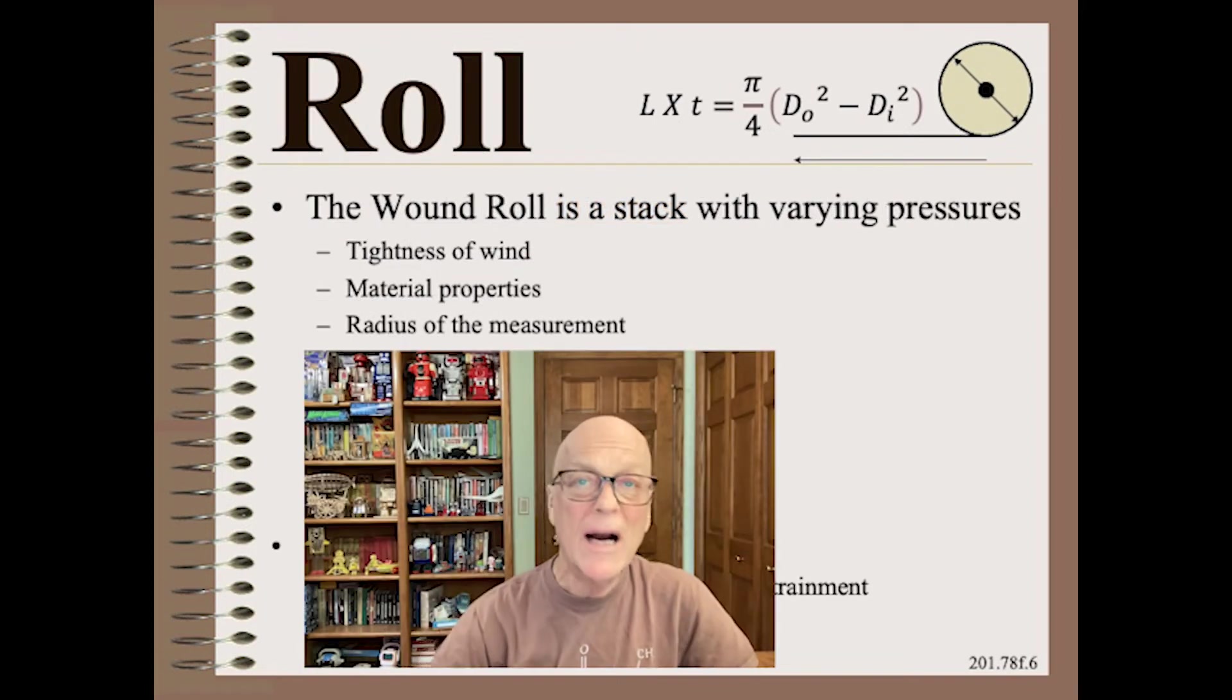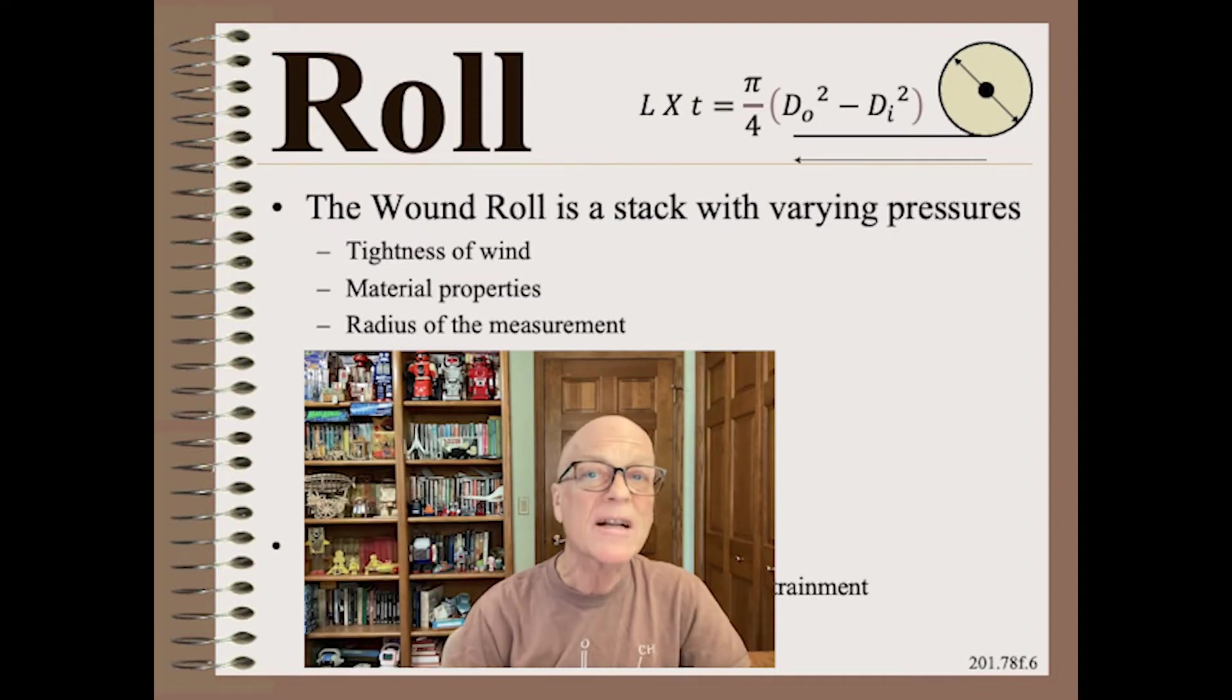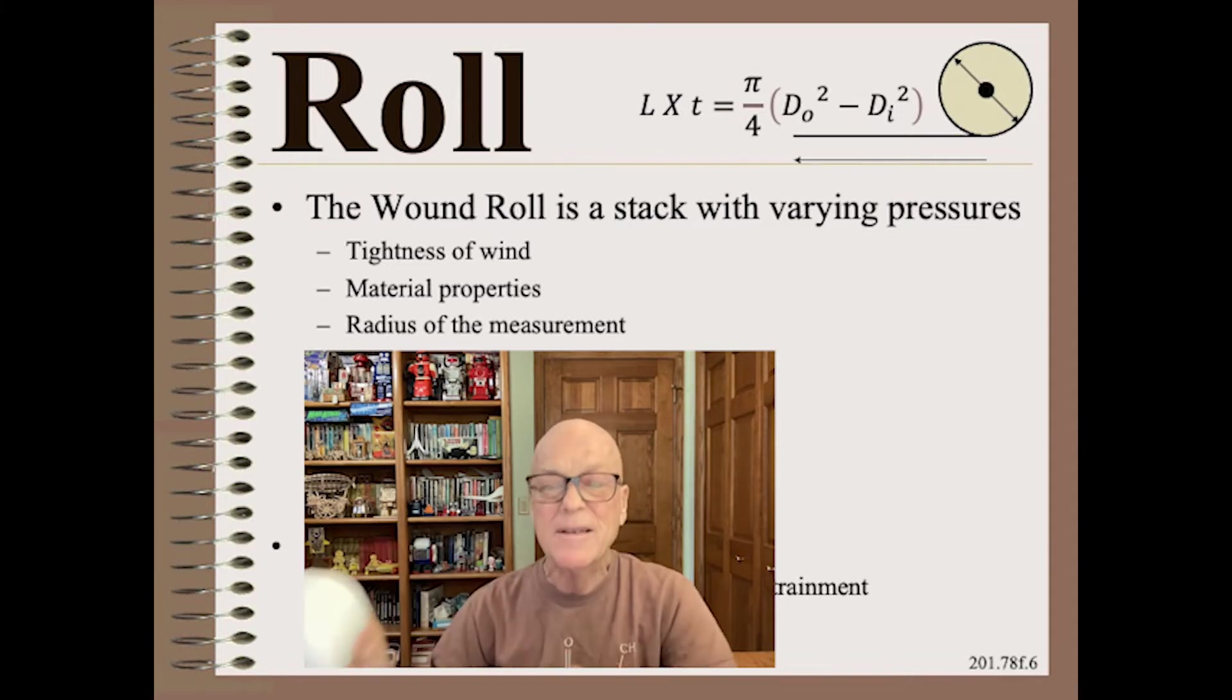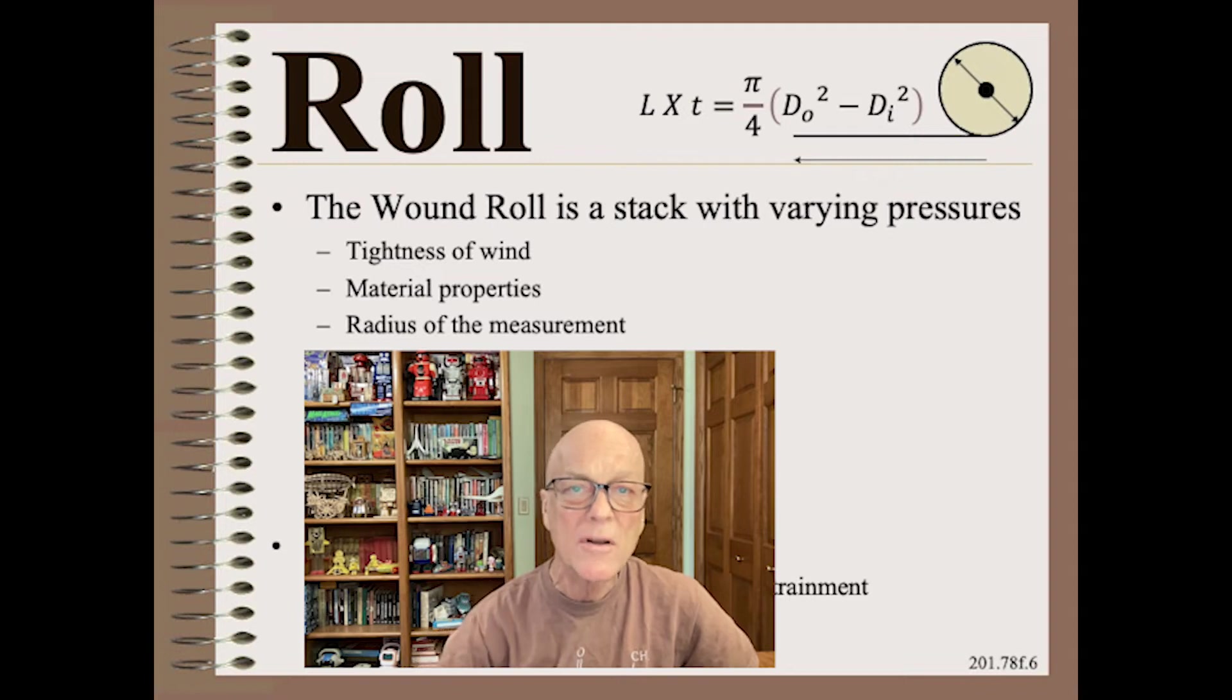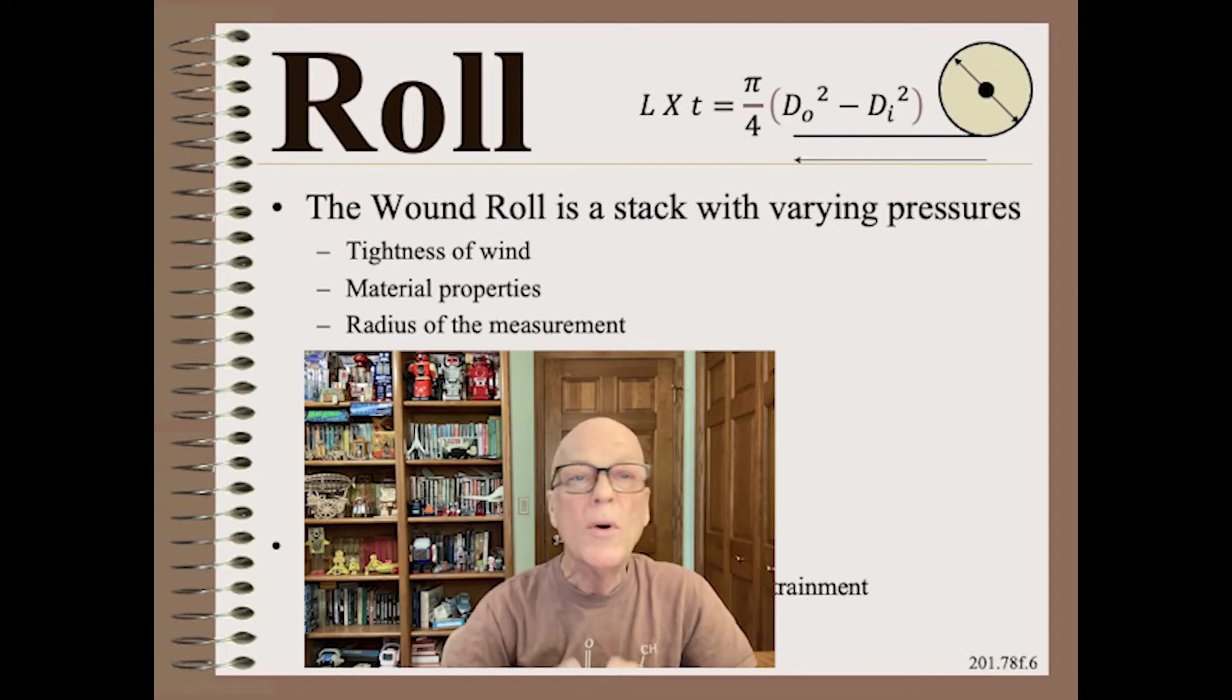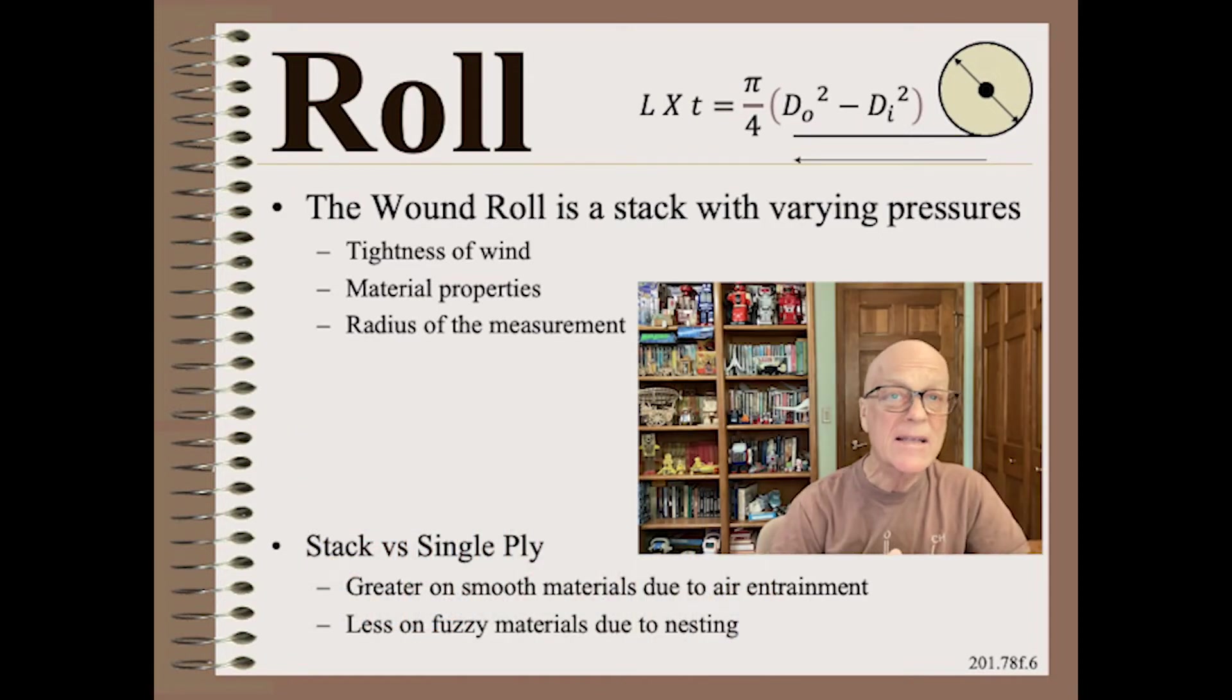The wound roll is even more complicated than web thickness as measured by a scanner or a test lab. Just as thickness varies with probe load, effective thickness in a wound roll varies with the tightness of the wind. Already a complicated set of physics. Also, pressure is different at the core versus the middle versus the top of the roll, thus the effective thickness will vary at those locations. Also, low-modulus materials, such as nonwovens or tissue, will compress more and thus act thinner when compared to high-modulus materials such as paper, film, and foil.